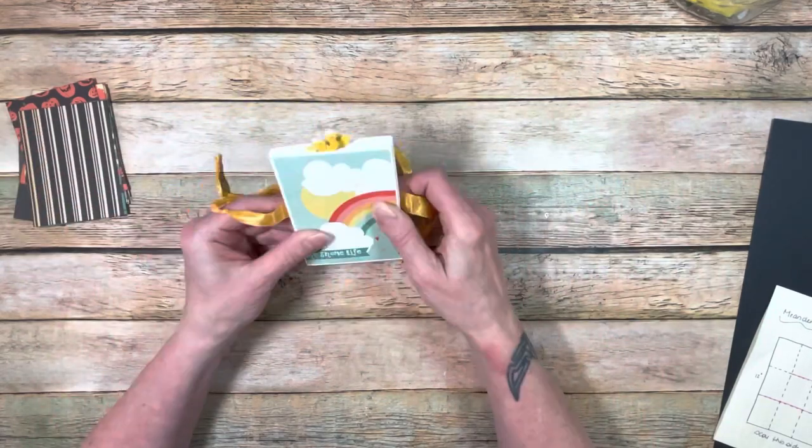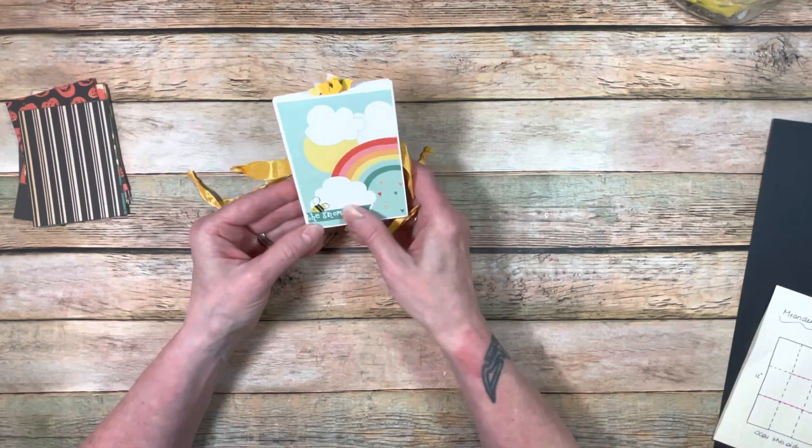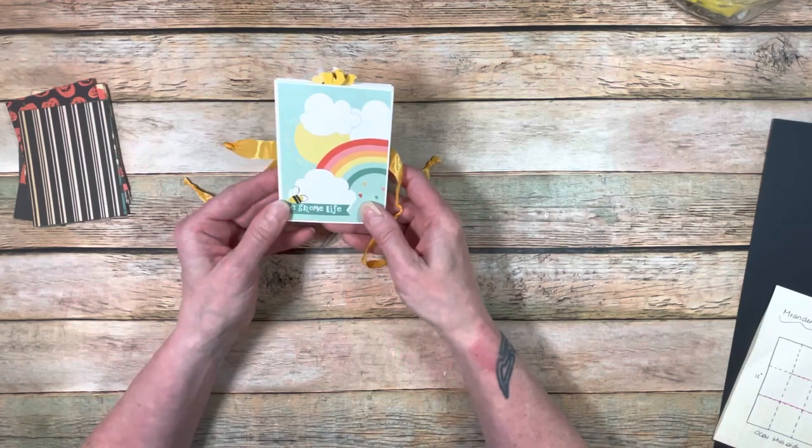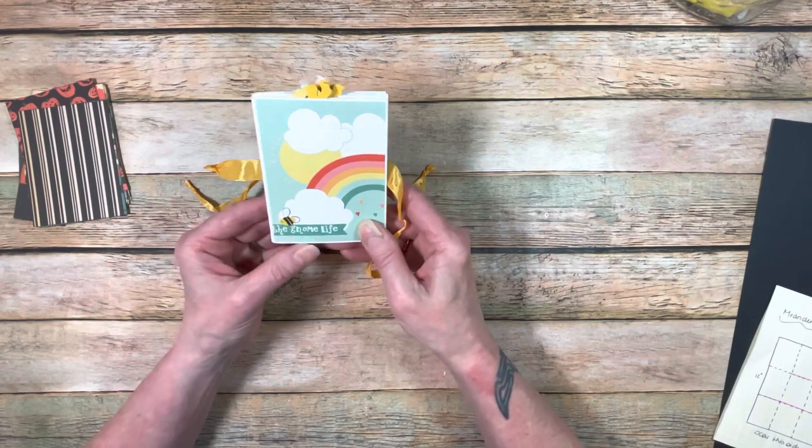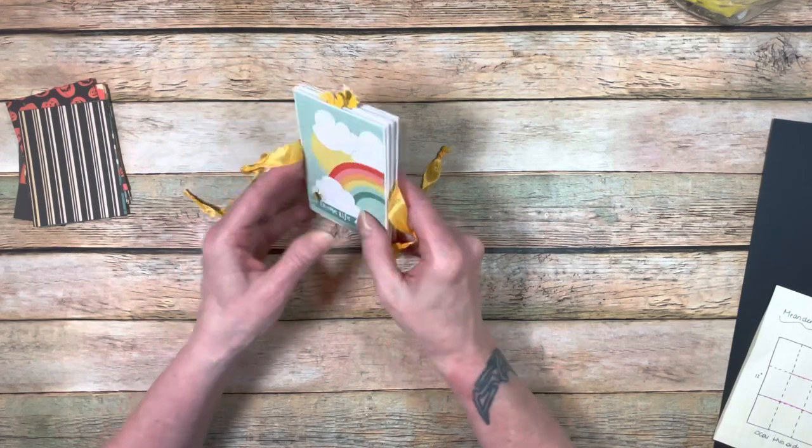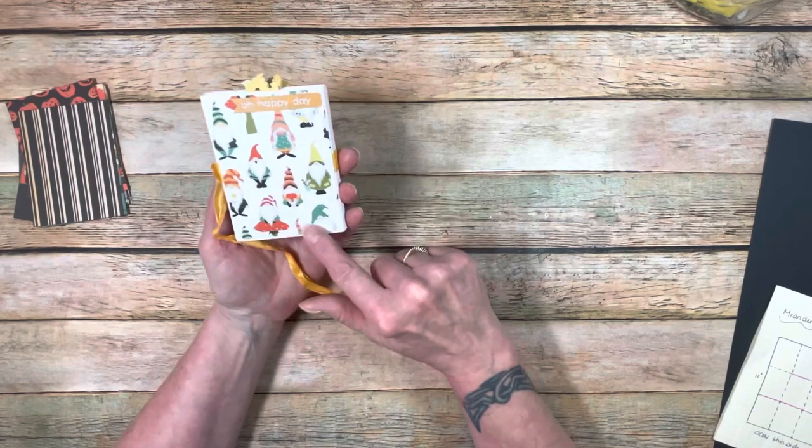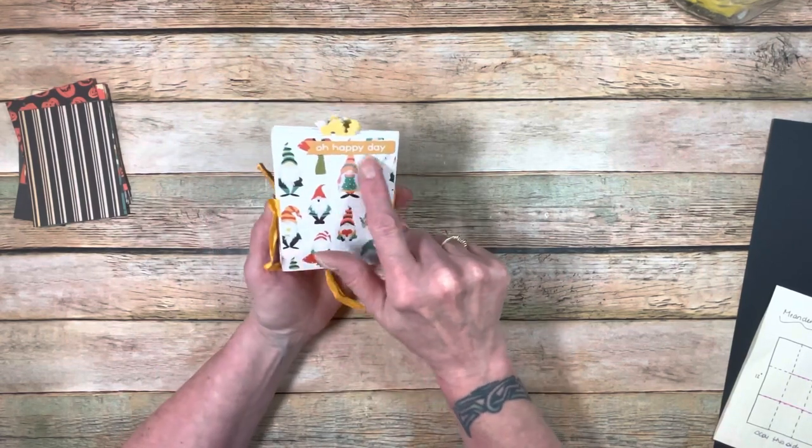I used a ribbon to tie it together. This one's called the Gnome Life and I used a sticker with this little bee that I fussy cut out of the paper on the cover. It's four by three. On the back I have the little gnomes.